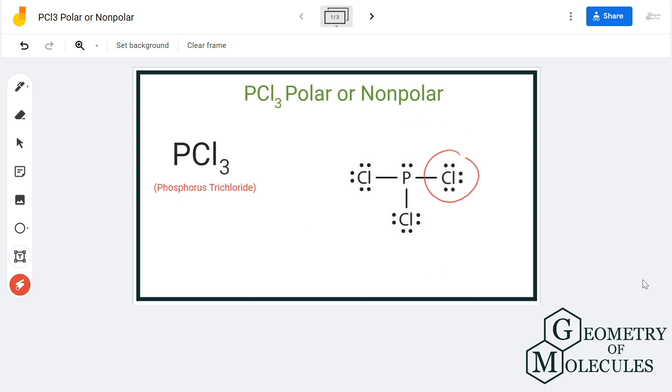So here you can see that three chlorine atoms are forming a single bond with a phosphorus atom, but the symmetry of this molecule is not symmetric as there are two chlorine atoms on this side but there is only one chlorine atom here. So because of this asymmetric molecular geometry of this molecule, there are chances that this molecule could be polar.